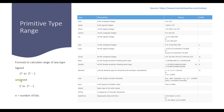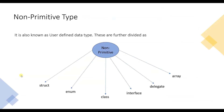Here is the formula to calculate the range of a particular type. For signed data types, the formula is: -2 raised to the power n, to 2 raised to the power n minus 1. For unsigned types, the formula is: 0 to 2 raised to the power n minus 1, where n is the number of bits.